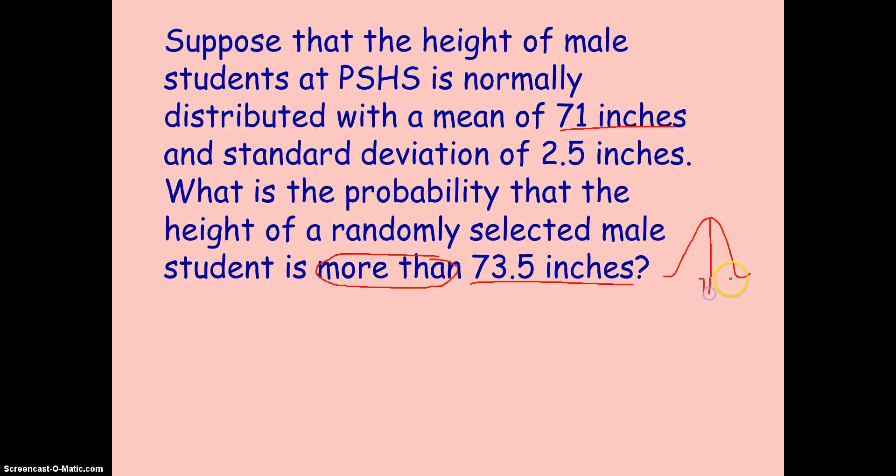So if I draw a curve, here's our normal curve. And here's the mean, it should be 71. And let's say here is 73.5. You want the area under the curve that's beyond that to find your probability. Well, what's the difference between 71 and 73.5? It's one standard deviation.